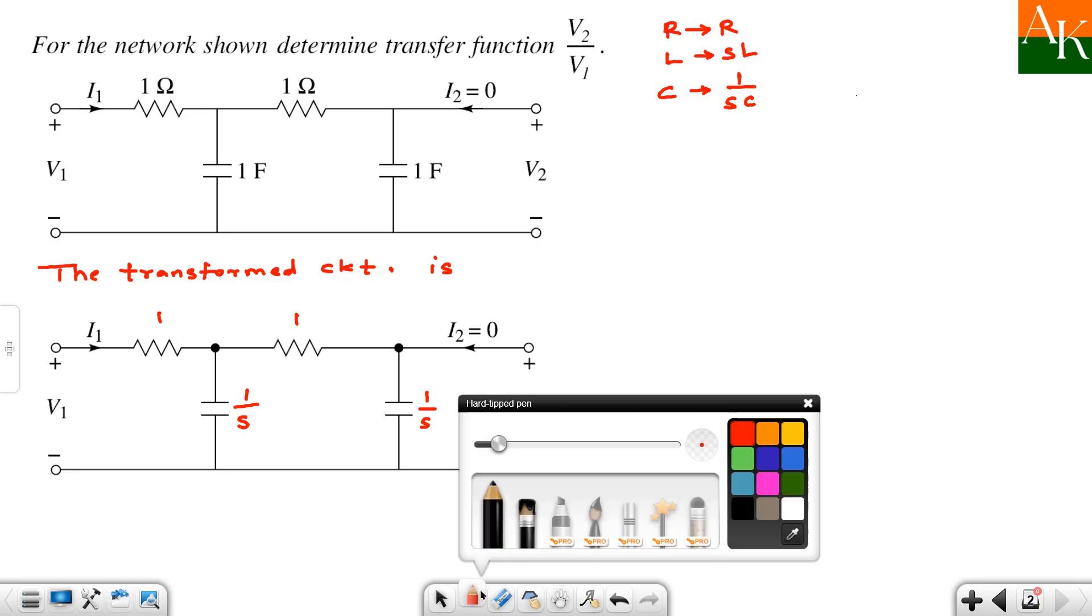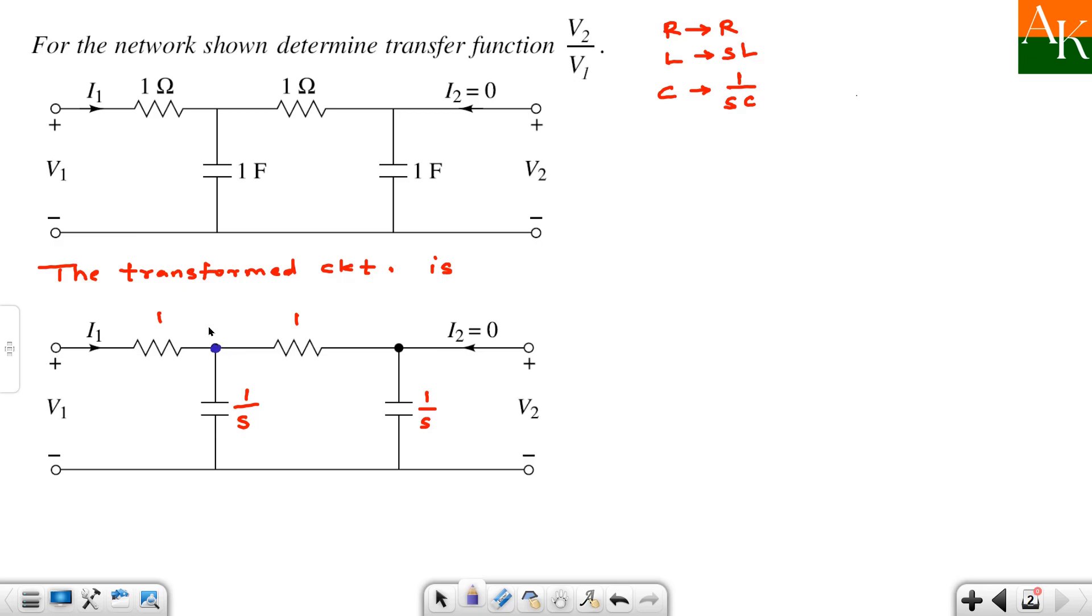Now we start this problem. First, you have to either assign voltages or currents. So, here the voltage is V1. Here there is a current. So, here you have to assign some other voltage. That voltage is nothing but VA. Now, here there will be current that you can denote as Ia and this potential you can denote as Vb. So, you have to assign VA, Ia, and Vb, these three quantities here.